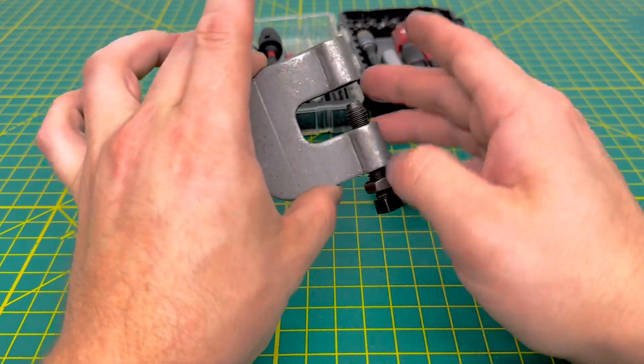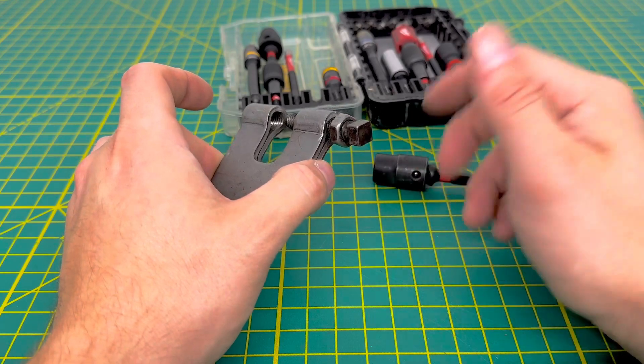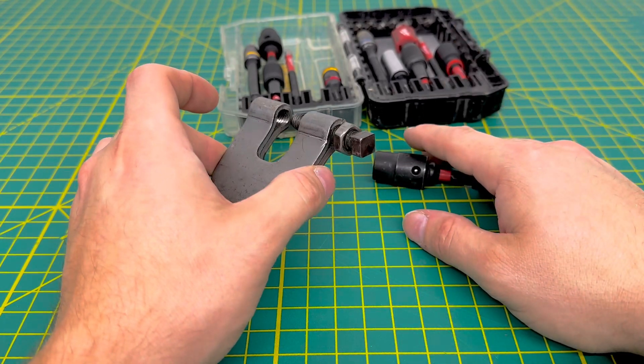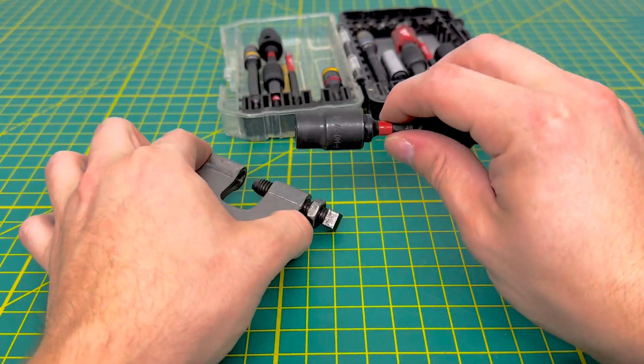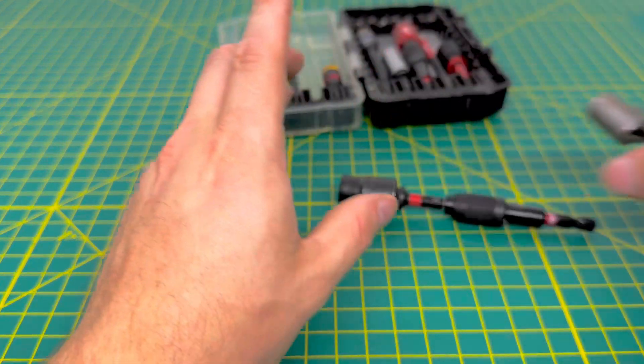Mainly we use these C-clamps for hanging steel that we can either hang ductwork off of, or hang some runs, some duct runs off of. So it is nice to have a bit, again, on your drill just to make that process go a little bit faster and work a little bit more efficient.